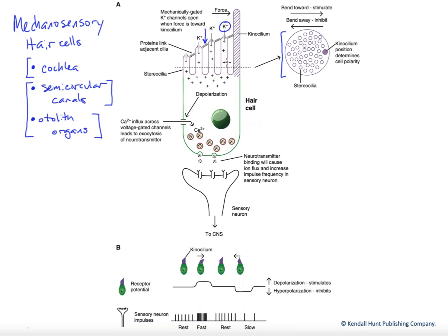Endolymph is a very extreme extracellular fluid. It is very high in potassium and much lower in sodium, opposite of normal. So in that case, potassium can carry our depolarizing flux as it enters the cell going down its electrochemical gradient.